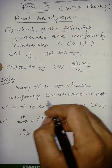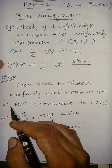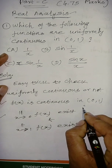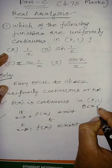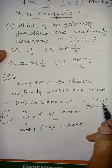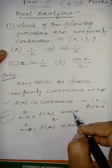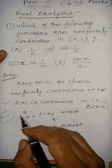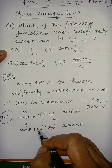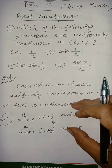Here is an easy trick to check whether a function is uniformly continuous or not. First, check that f(x) is continuous on the open interval (0,1), i.e., 0 < x < 1. Second — and this is very important — the limit as x tends to 0 (the left endpoint) must exist, and the limit as x tends to 1 (the right endpoint) must also exist.